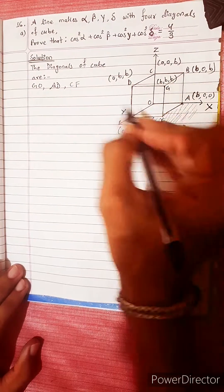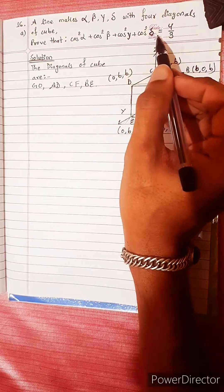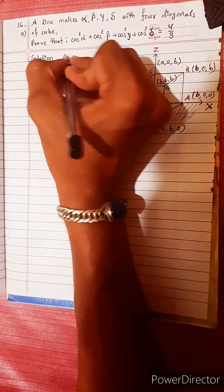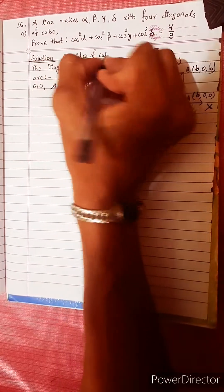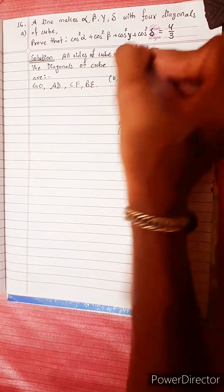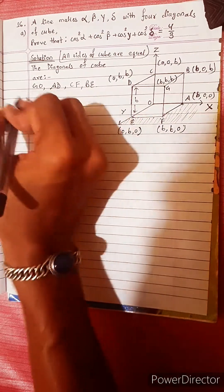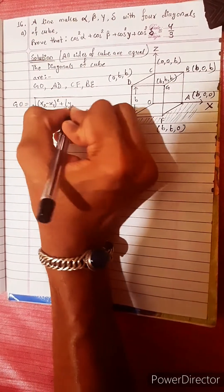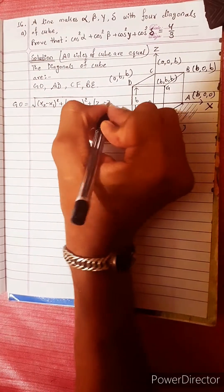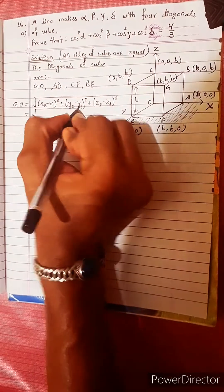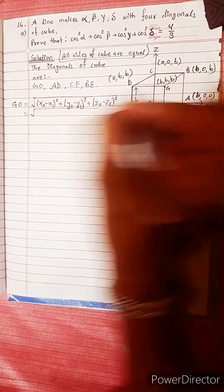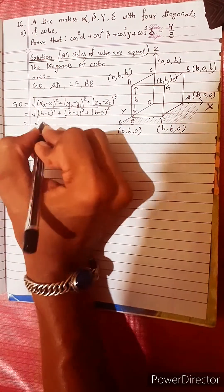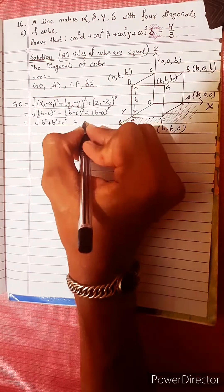I am going to write the direction of the diagonal. Now we have to write B. Suppose we have to write B — then we have to note that all sides of the cube are equal. Now we have to write the diagonal length: diagonal length equals to under root of (x2 − x1)² + (y2 − y1)² + (z2 − z1)². Substituting from origin (0,0,0) to (b, b, b): equals √(b² + b² + b²) = b√3.